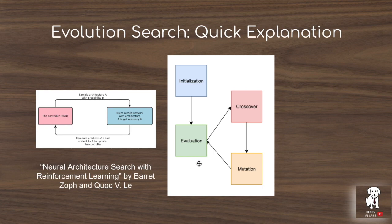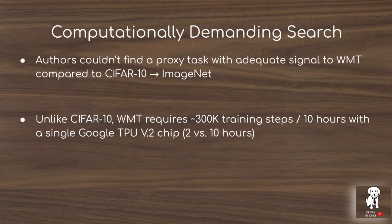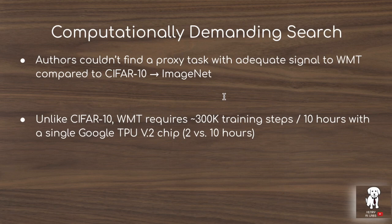One of the biggest bottlenecks with neural architecture search is having to train the child network to obtain the fitness function. In convolutional network searches like AmoebaNet, child networks are trained on the CIFAR-10 proxy task for ImageNet rather than directly on ImageNet, since CIFAR-10 is a smaller dataset with lower resolution input. However, unlike CIFAR-10, the authors cannot find a good proxy task for neural machine translation, so they must train on the final task — requiring about 10 hours of training per child model compared to two hours on CIFAR-10.